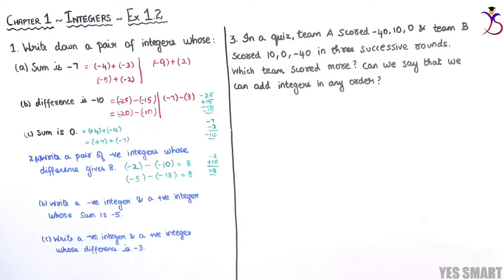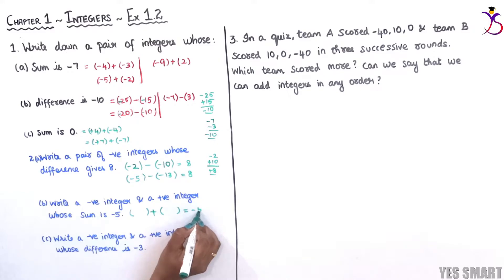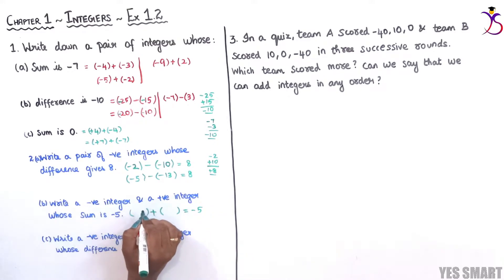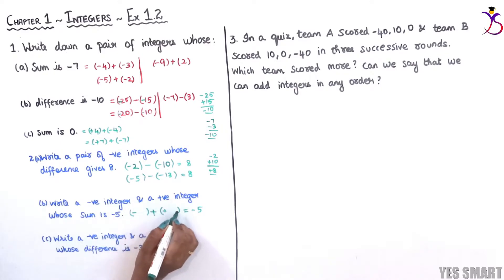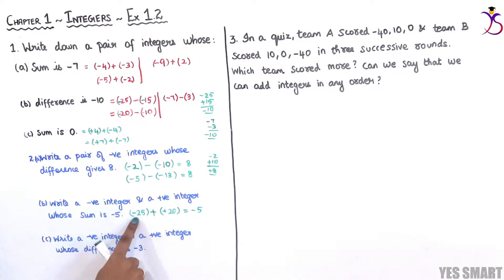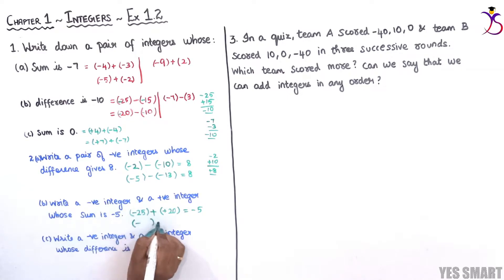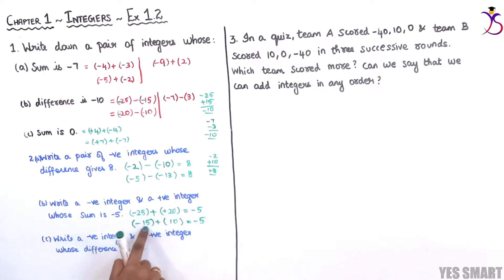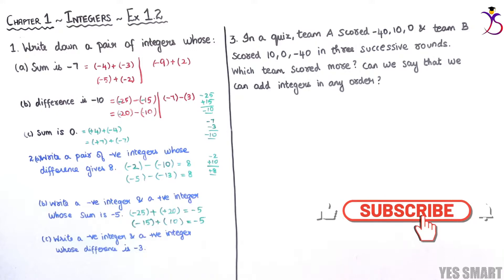Part (b): write a negative integer and a positive integer whose sum is minus 5. The middle sign is plus and the answer should be minus 5. They have clearly said one negative integer and one positive integer. Splitting 5 as 25 and 20: minus 25 and plus 20. Since it is plus there is no sign change — minus into plus minus — on subtraction you get 5, and the greater number sign is minus. Similarly, you can try another combination like 15 and 10. The highest number must carry the minus sign.